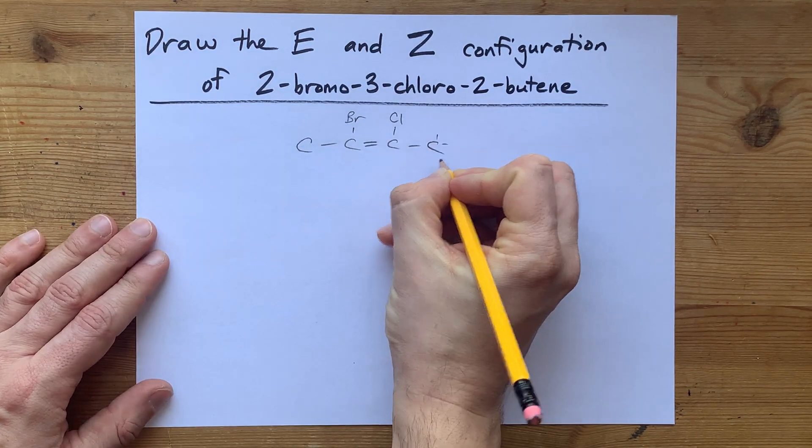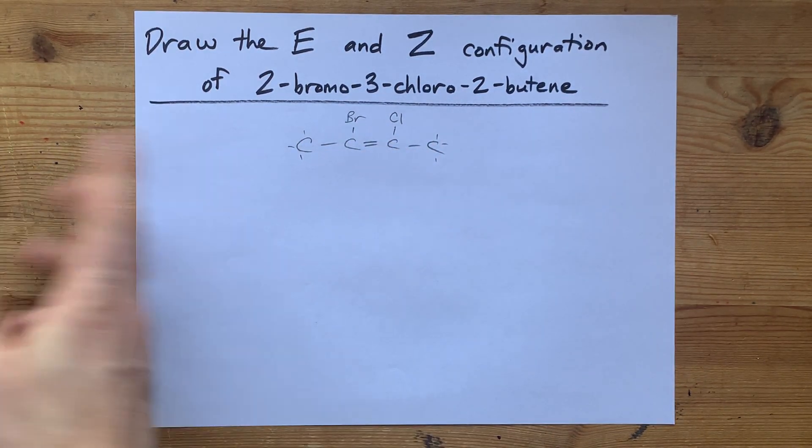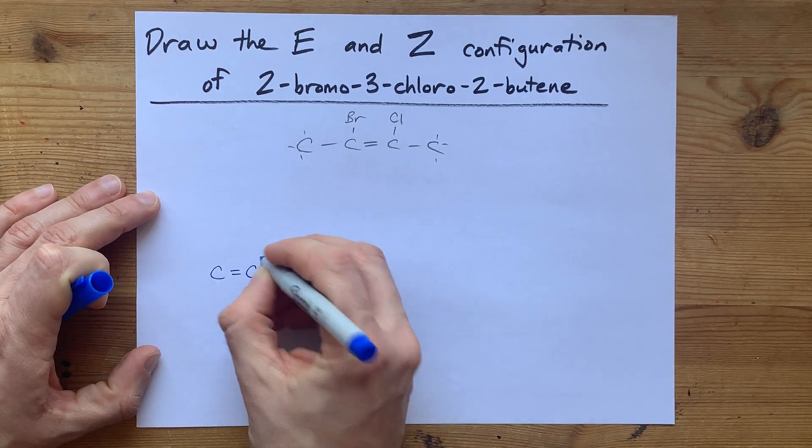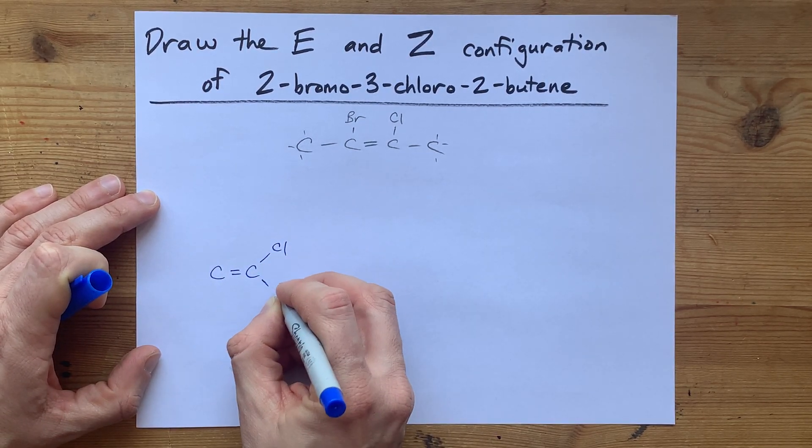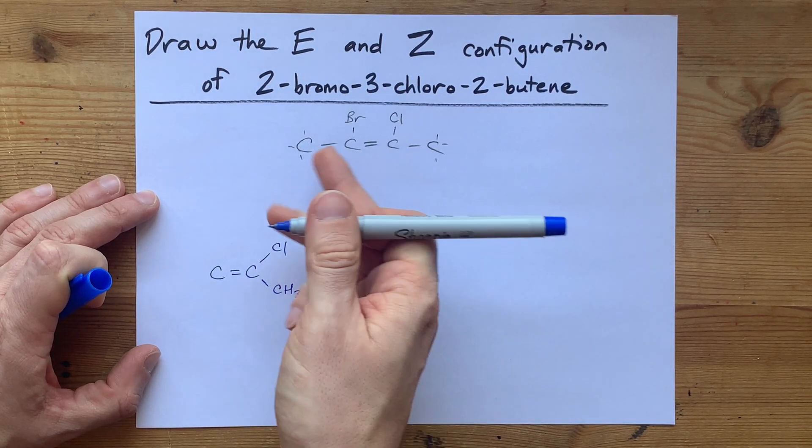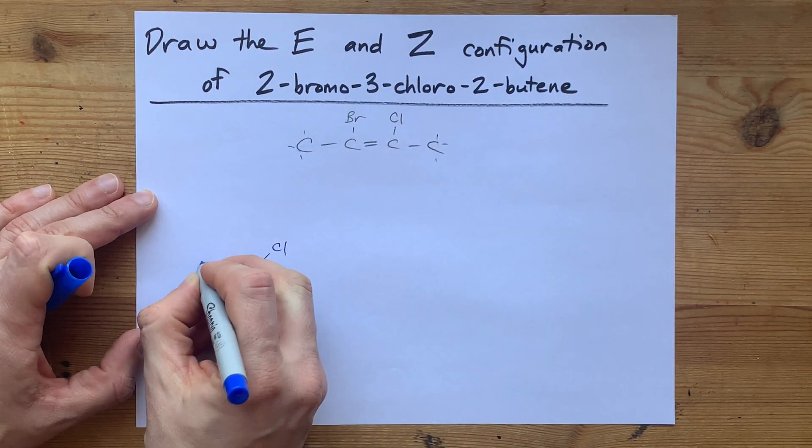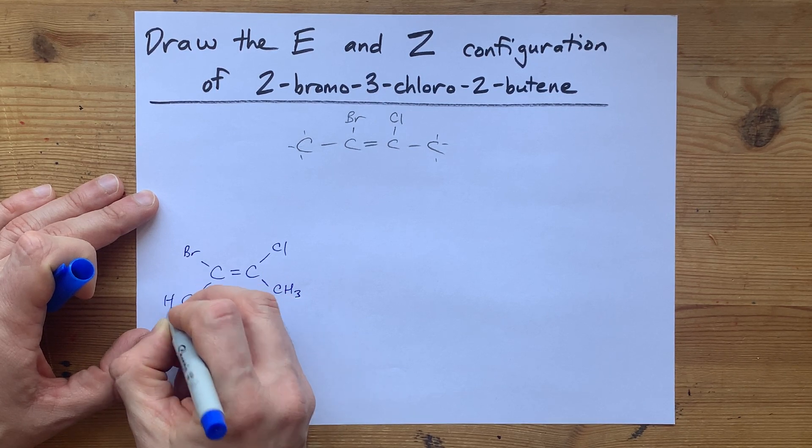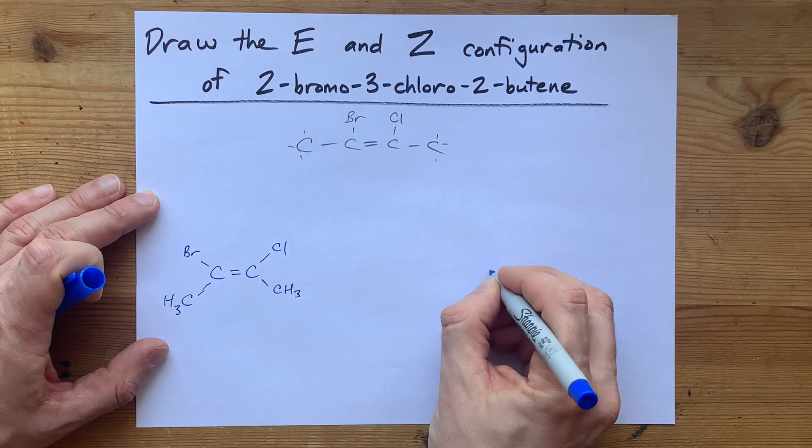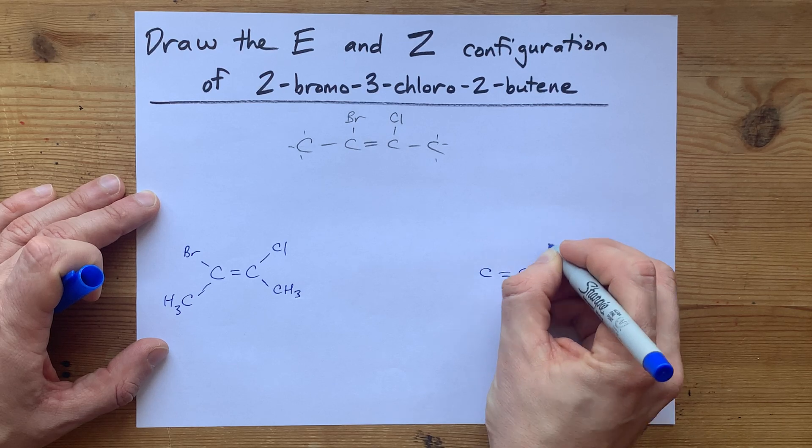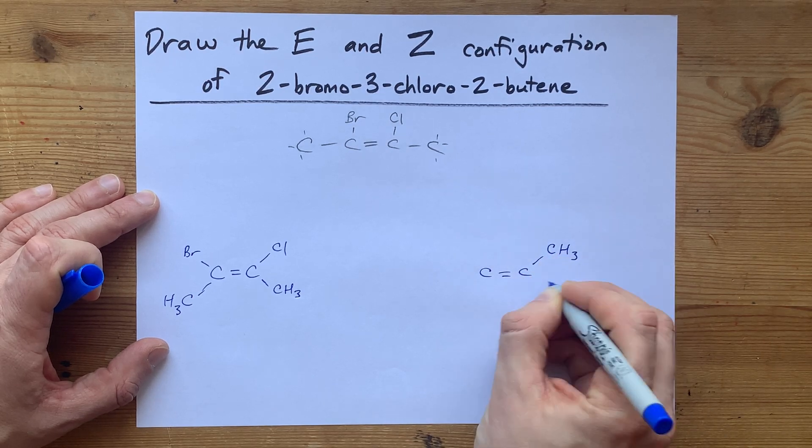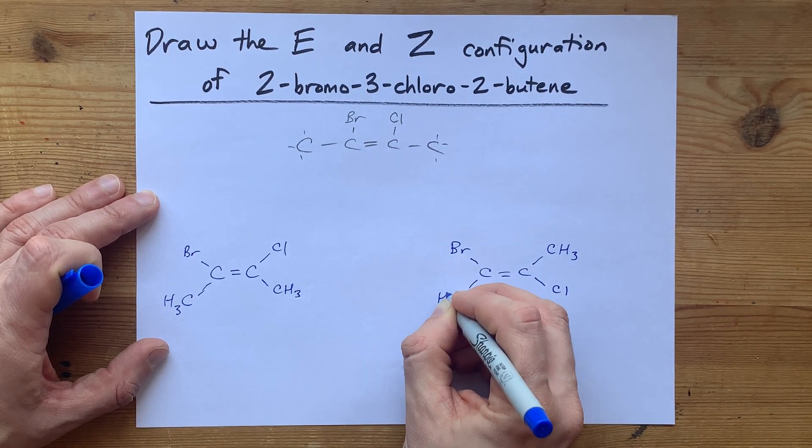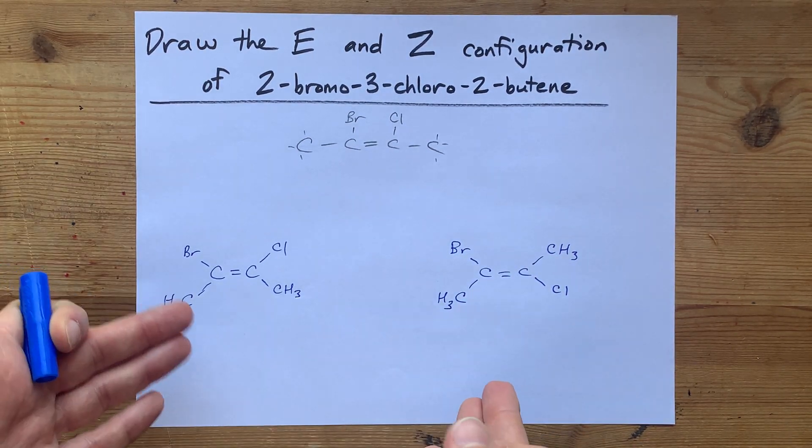But you're here to get help figuring out which one's E and which one's Z. Am I right? Let's just draw that molecule again. I've got a Cl and a CH3 on that carbon. I've got a Br and a CH3 on that carbon. Then I'm going to draw the other one here. I'm going to put CH3 on top and Cl. I'm going to put Br here and CH3. You can see that these are different isomers.